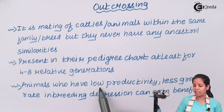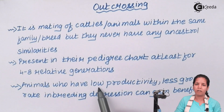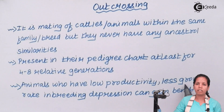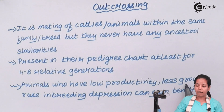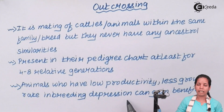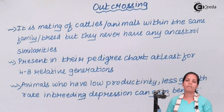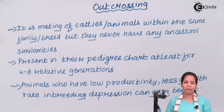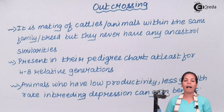Animals which have very little productivity in terms of milk, dairy products, or eggs in case of poultry — those with lesser growth rate despite proper nutrition and shelter — and animals who have undergone inbreeding depression due to the inbreeding process can be benefited from outcrossing. So in this part of the chapter we studied about outcrossing and how it provides benefits for certain animals in certain conditions. Thank you.